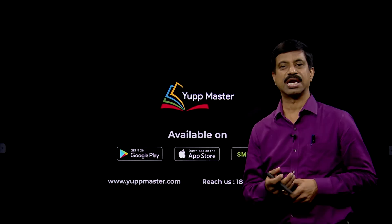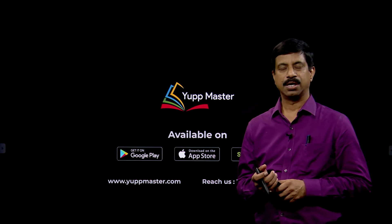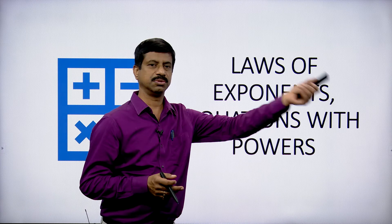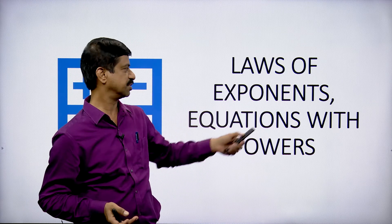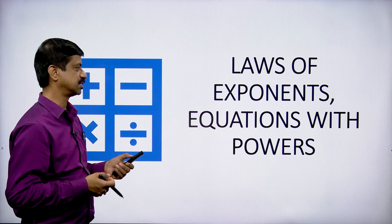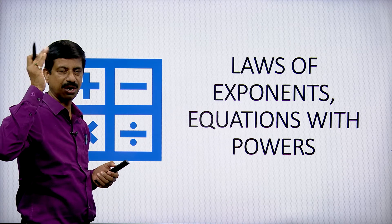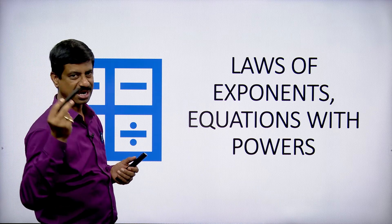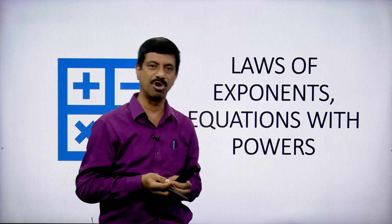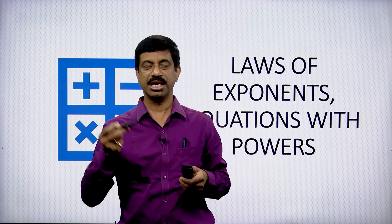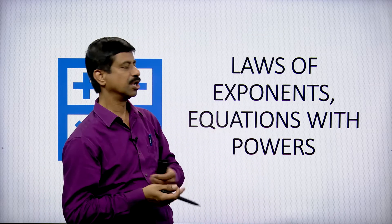Good evening children, welcome back to our class of SAT Mathematics. Today we have been doing functions, quadratic equations, and exponential forms. Now we are entering into laws of exponential forms. Exponents with variables in the power are called exponential forms, such as a^m · a^n = a^(m+n). All such rules come under laws of exponential.